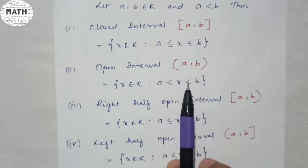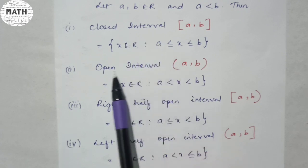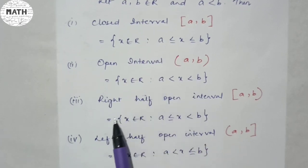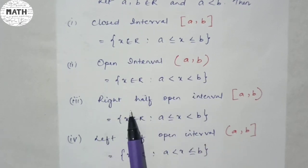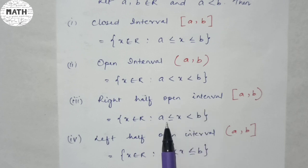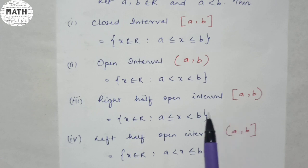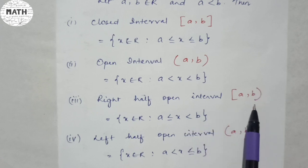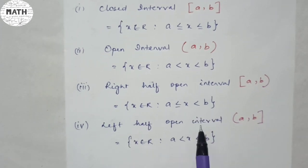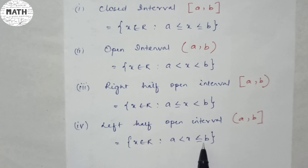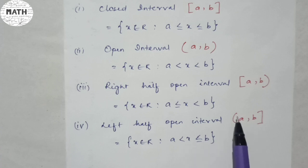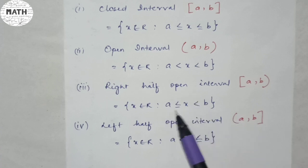In a closed interval there is an equal-to sign, so we use a square bracket. Then comes your right half-open interval: in A we have an equal-to sign, so square bracket; in B we don't have an equal-to sign. We are always assuming X between A and B, between two numbers.